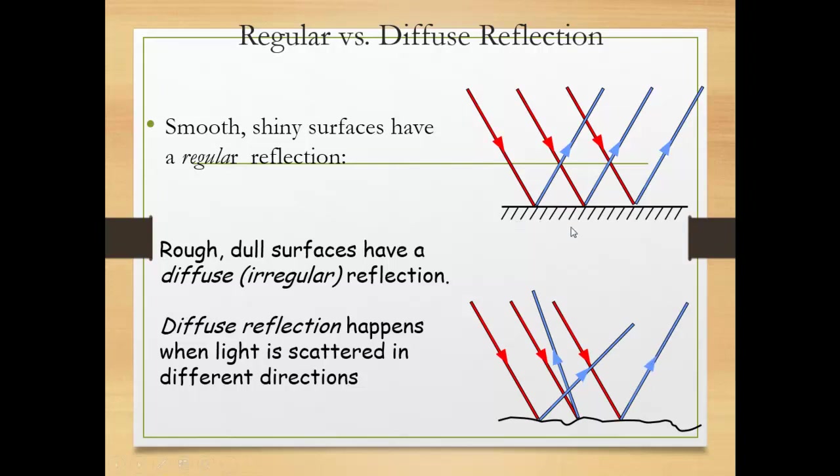So this is the shape of regular reflection, this is the shape of irregular reflection. It happens on a smooth surface, it happens on a rough or dull surface.